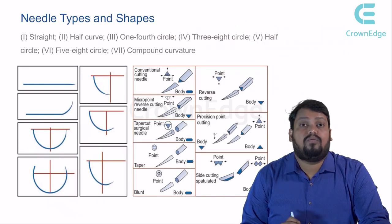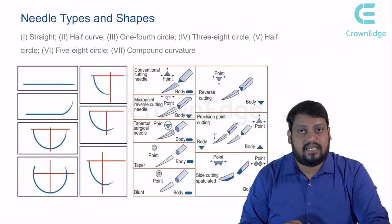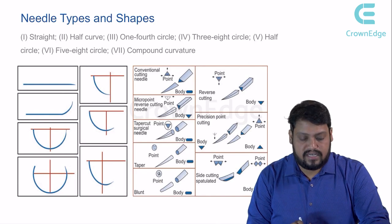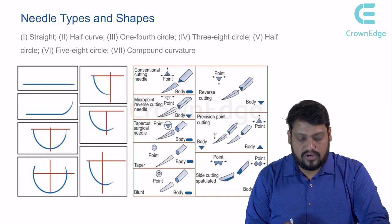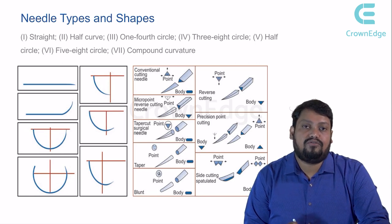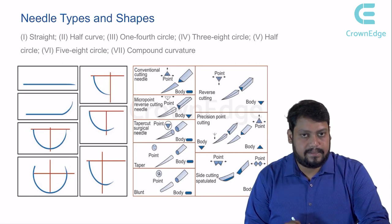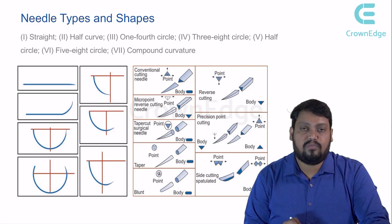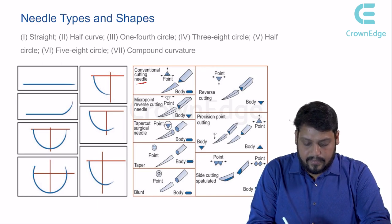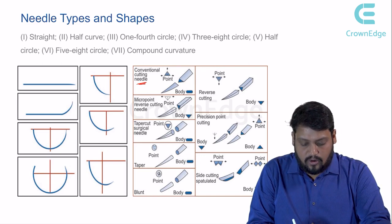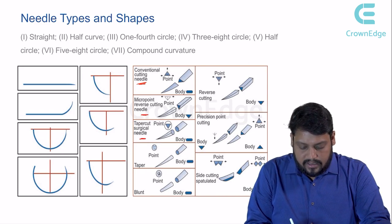Needle shapes range from straight, semi, one-fourth circle, three-eighths circle, half circle, five-eighths circle, to compound curvature. We generally use the three-eighths and compound curvature based on the surgical site. Needles are also classified by their tip type: conventional cutting, micro-point reverse cutting, or tapered surgical needle — either taper or blunt.